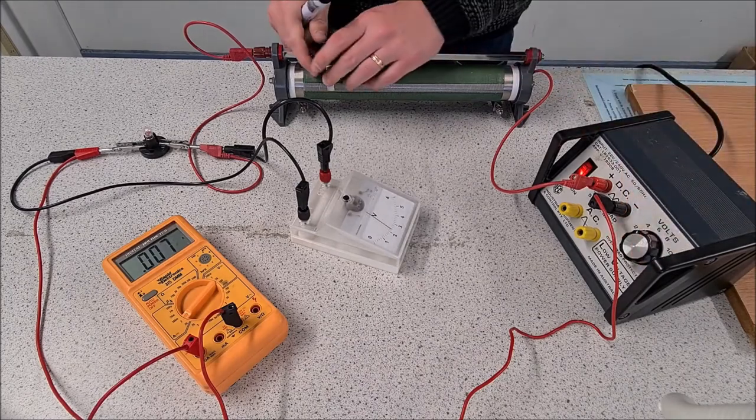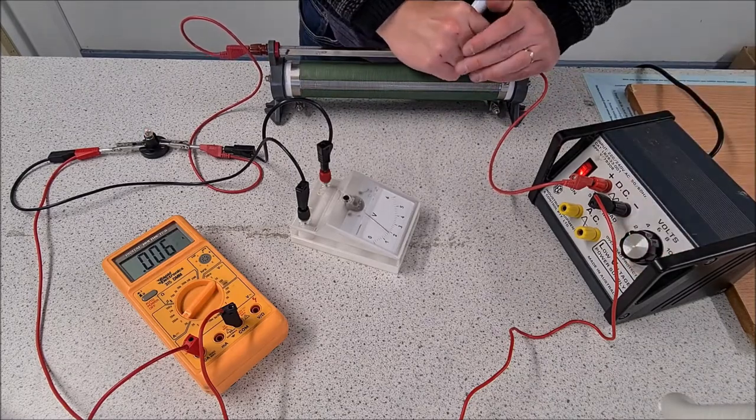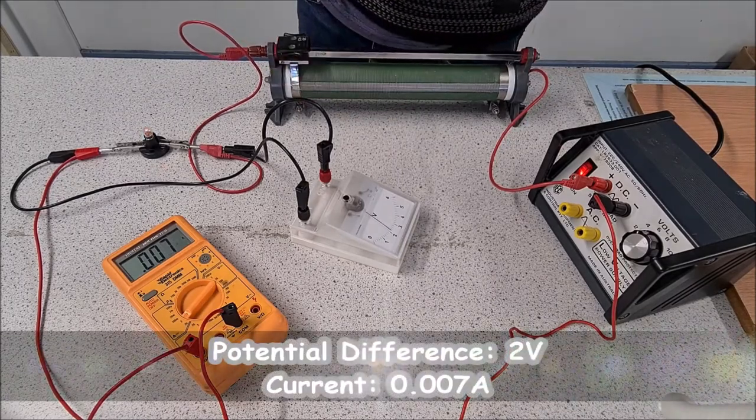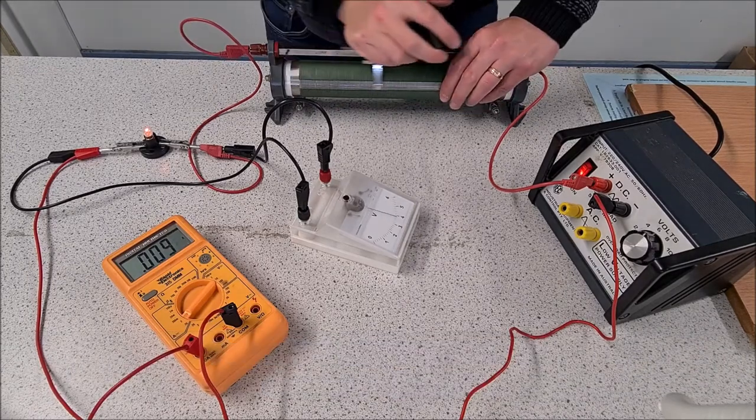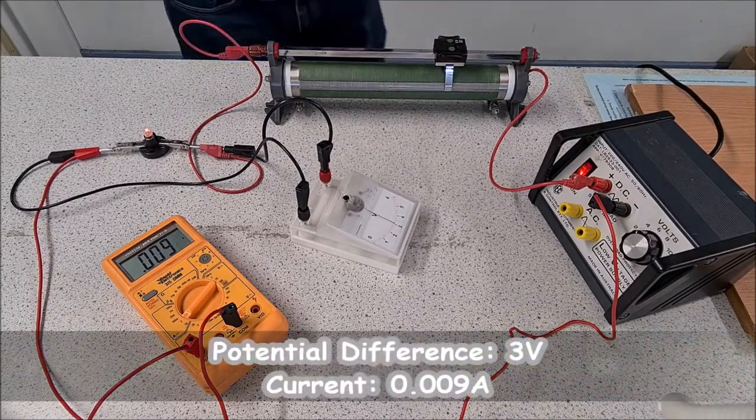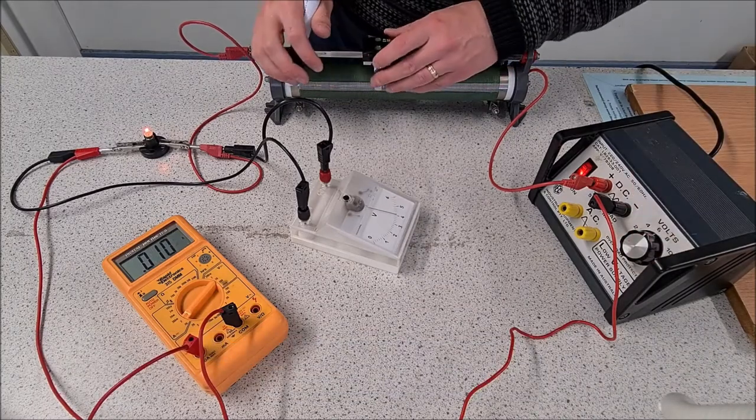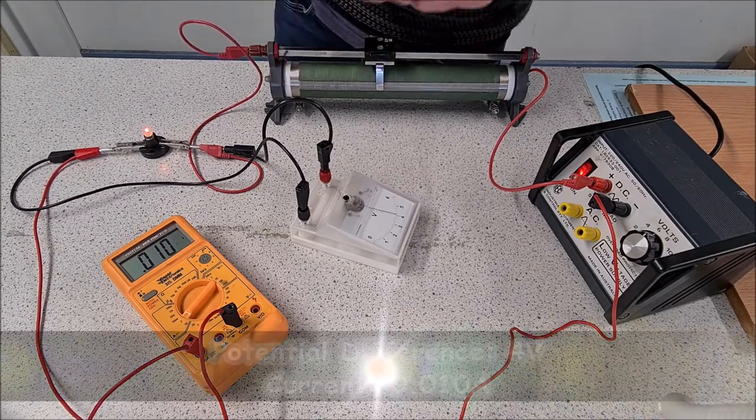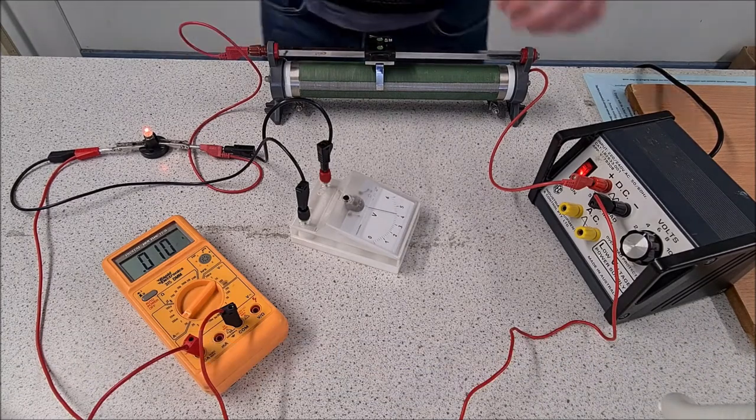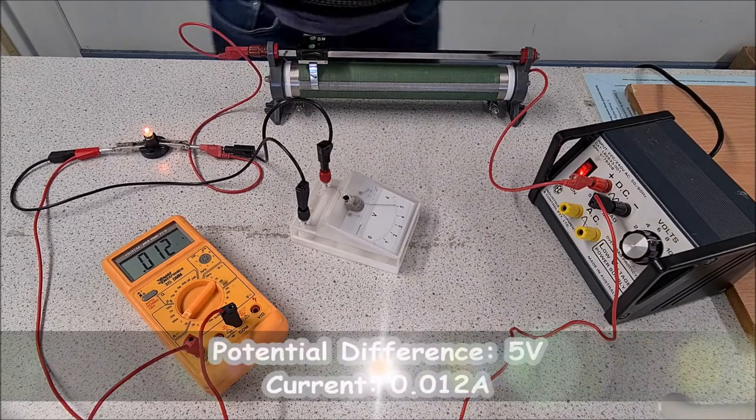Let's increase the potential difference now to 2 volts. So at 2 volts, I have 0.007 amps, and we'll go up to 3 volts. 0.009 amps, 4 volts, 0.010, and then for 5 amps, we have 0.012.